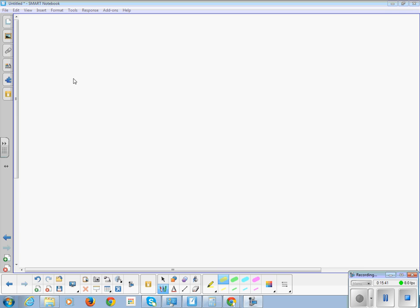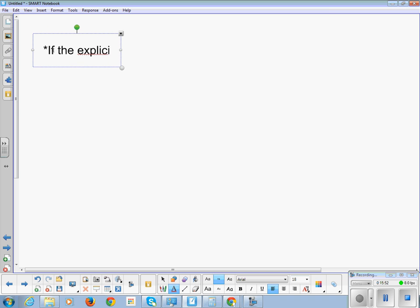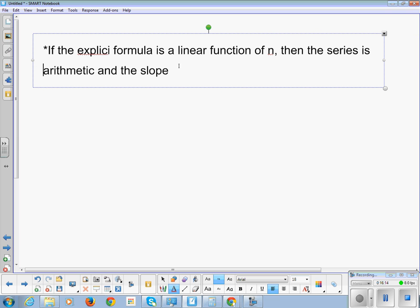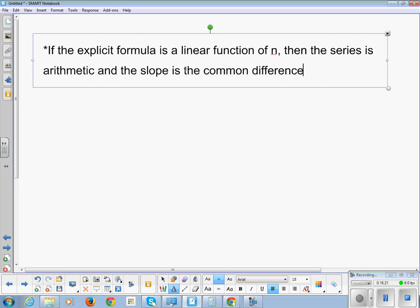So, there is one little piece of information that was hidden in this chapter that I want you guys to please have. I put a little star next to it. So, if the explicit formula is a linear function of n, then the series is arithmetic. And the slope is the common difference.